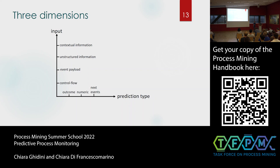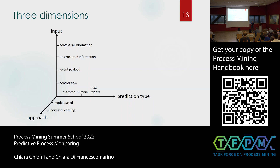The second dimension is what kind of information we are going to use to make predictions. We can use only the control flow — the sequence of activities — we can also take into account the data payload associated with this sequence of activities, some unstructured or textual information, or some contextual information. The third dimension is related to how we make predictions, classifying approaches into those using an explicit process model and those using machine learning or deep learning techniques.